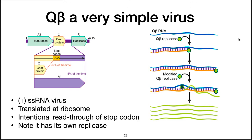We start with Qbeta. Qbeta is a simple, positive, single-stranded RNA virus that infects E. coli. Since it encodes a coding strand, the host translates it directly at a ribosome into four genes: a maturation protein A2, two coat proteins C and A1, and a replicase R.